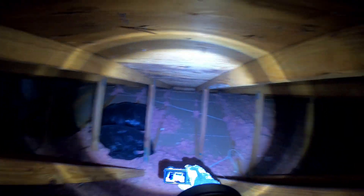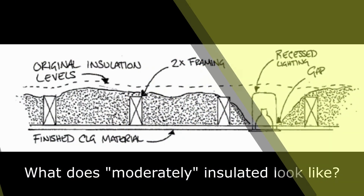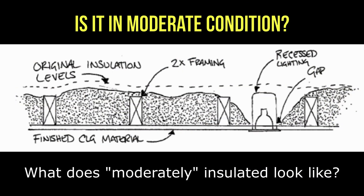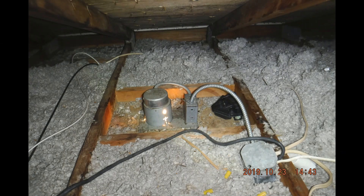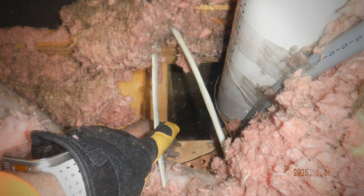If you have a moderately insulated attic, you may notice missing insulation around wiring, electrical outlets, and plumbing. Overall, the insulation is not up to today's R-value standards, but rarely below 70% of the intended thickness.